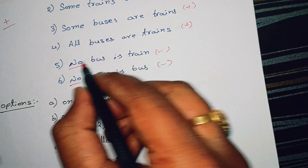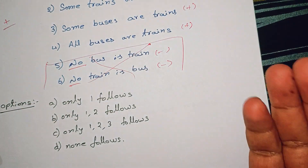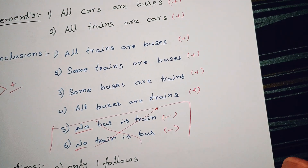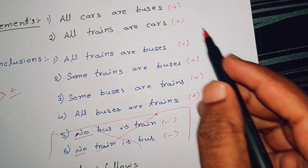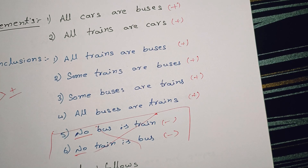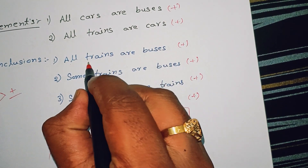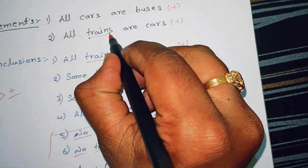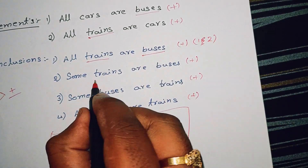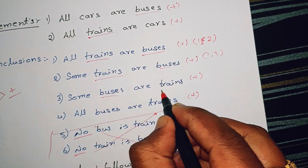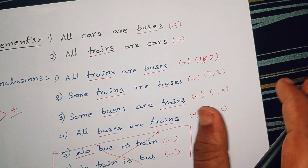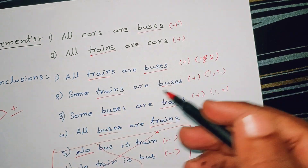Now we have negative conclusions. So we have to take two results. First, we have positive statements — we have to cancel. So the conclusion is that if you have two statements you can check. All trains are buses — trains in the second statement, bus is in the first statement. So this is one and two statements. Trains are buses — this is one and two. Buses are trains — this is one and two. So we have no single statement. The two statements are combined to complete conclusions.